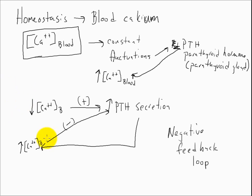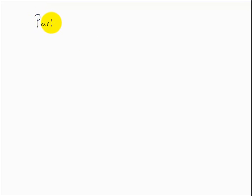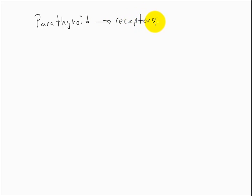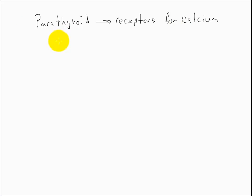Going into a little more detail: in the parathyroid gland there are receptors for calcium. It's the parathyroid itself that detects calcium levels. These are called calcium-sensing receptors, or CSRs. This makes sense since it's the parathyroid that releases parathyroid hormone in response to a low level of calcium.